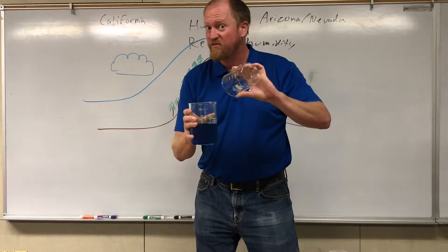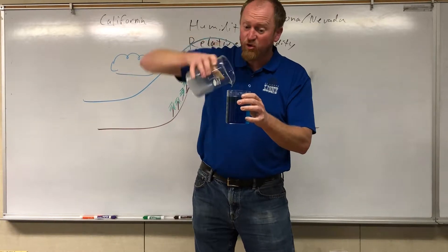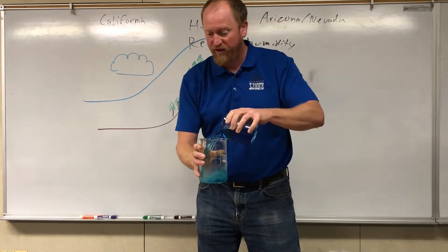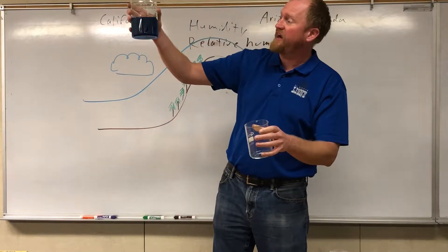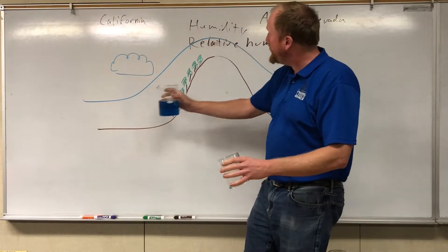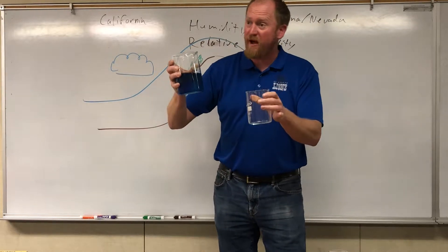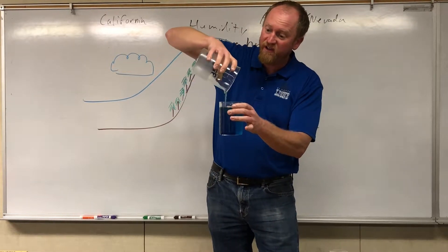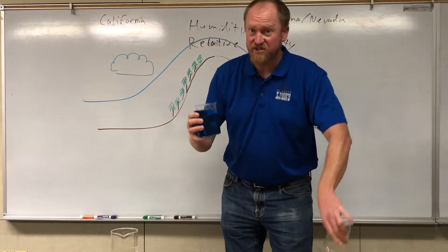50% relative humidity, 80% relative humidity. Notice the total amount of water — the total humidity — has not changed. It's the relative humidity, how full the air is with water. So you start out with air that's not too wet, and it comes in and it starts going up the mountain. Now as you go up a mountain, you may notice it gets colder, and as it gets colder, the air's ability to hold water decreases.